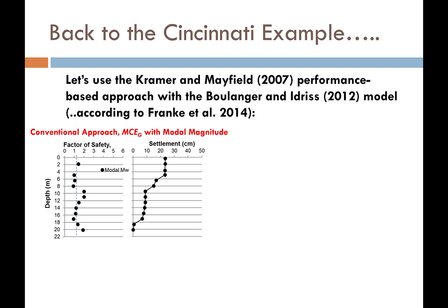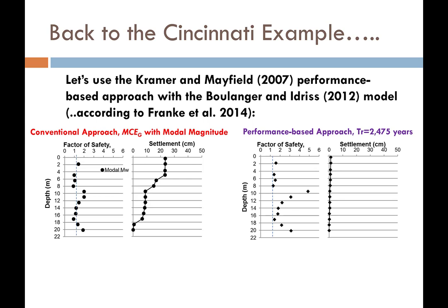Going back to the problem with Professor Youd at that facility near Cincinnati, Ohio — when I analyzed the site using the pseudo-probabilistic approach, I got the same result as the engineers and Professor Youd: about 23 cm of settlement. But when I used a performance-based liquefaction and settlement approach — using the same Boulanger and Idriss triggering model and the Ishihara and Yoshimine settlement model — according to the Kramer and Mayfield approach, this is what I got for the 2,475-year return period.